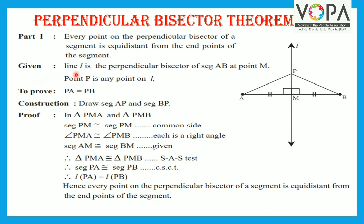Given: line L is the perpendicular bisector of segment AB at point M. Point P is any point on line L. We have to prove PA is equal to PB. Construction: Draw segment AP and segment BP.